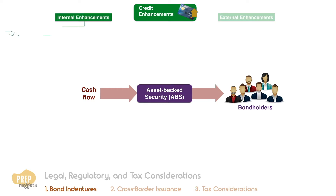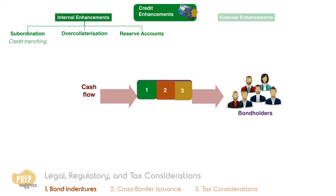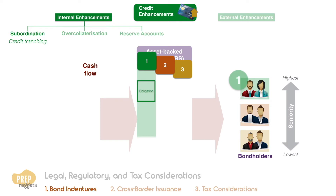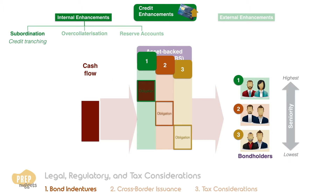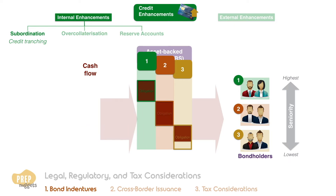The most common forms of internal credit enhancement are subordination, over-collateralization, and reserve accounts. Subordination, also known as credit tranching, is a method where a bond issue is divided into tranches with different seniority of claims. The cash flows generated by the underlying assets first go to fulfilling the obligations of the most senior bonds, then to the next highest priority bonds, and so forth. This is sometimes referred to as a waterfall structure, because if the underlying assets yield less than the expected cash flows needed to fulfill all obligations, the bonds with the lowest seniority get hit first.